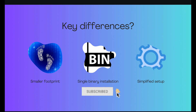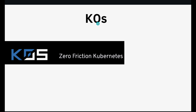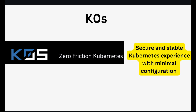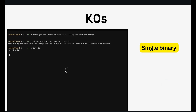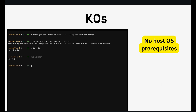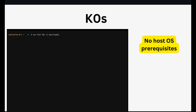In a nutshell, K3s is a lightweight and easy-to-use version of Kubernetes. The zero in K0s stands for zero friction. It is a Kubernetes distribution that aims to provide a secure and stable Kubernetes experience with minimal configuration. It is especially useful for developers with little or no Kubernetes knowledge or experience. It is delivered as a single binary with no host OS prerequisites other than the host kernel.